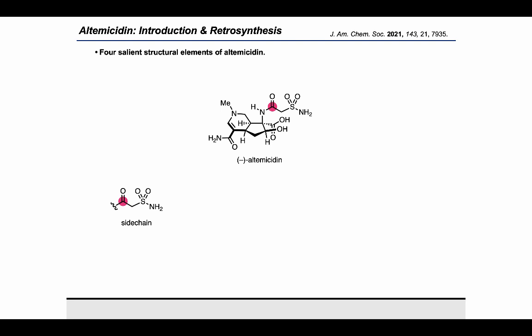Next we recognized the latent tetrahydropyridine harbored in altemicidin, colored here in yellow, which ultimately guided our overall dearomative strategy. The tetrahydropyridine is fused to a highly substituted cyclopentane ring, which completes altemicidin's aza-indane core and contains an alpha tertiary amine stereocenter.